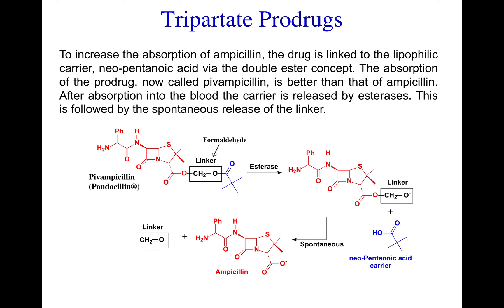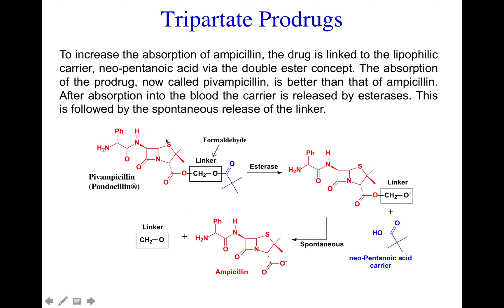In this case the tripartite prodrug approach was used to increase absorption of ampicillin. The drug is linked to the lipophilic carrier neopentanoic acid via a double ester bond concept. The absorption of the resulting prodrug, now called pivampicillin, is much improved over ampicillin. After absorption into the blood, the carrier neopentanoic acid is released by esterase, followed by spontaneous release of the linker forming formaldehyde in very low concentrations, giving us ampicillin.